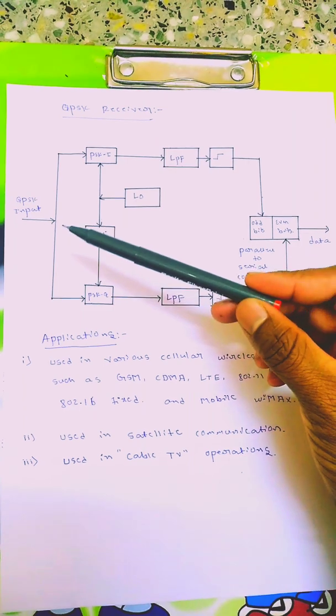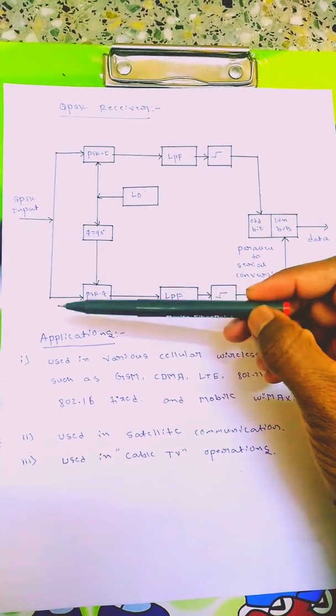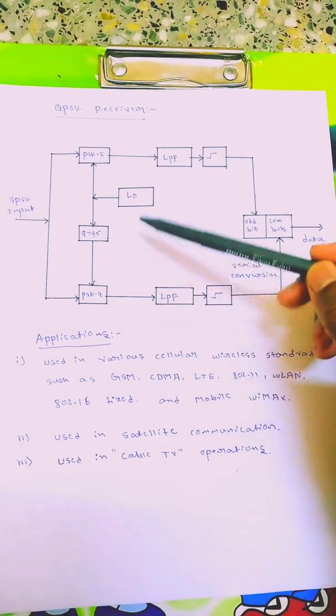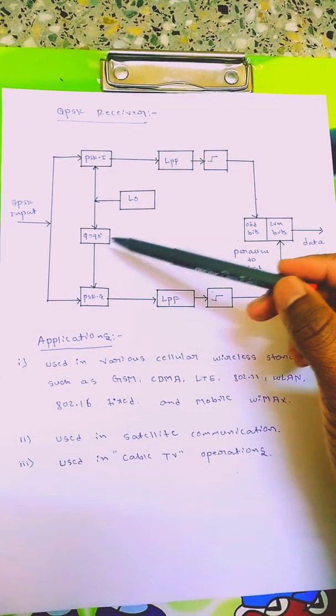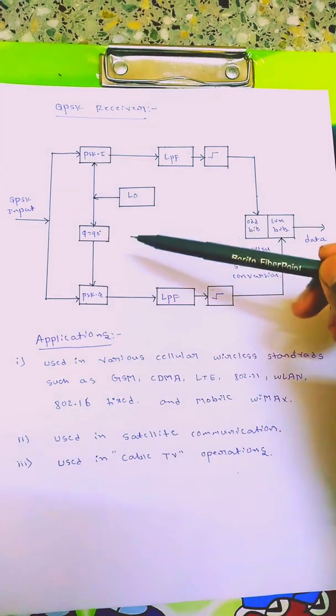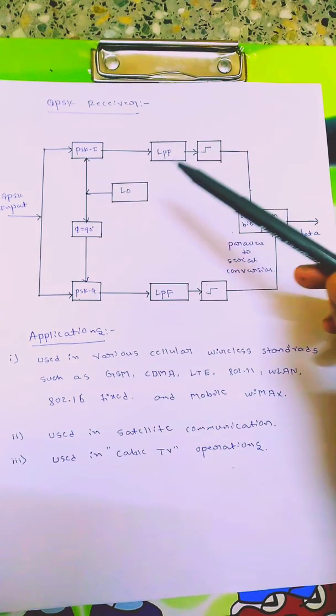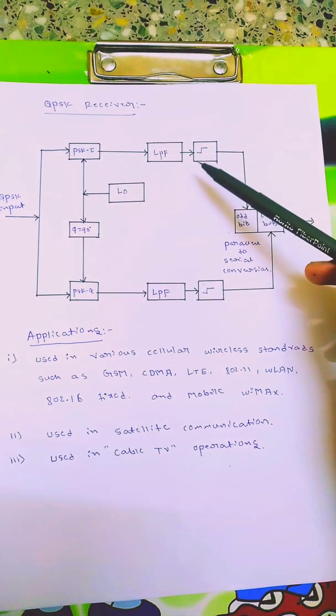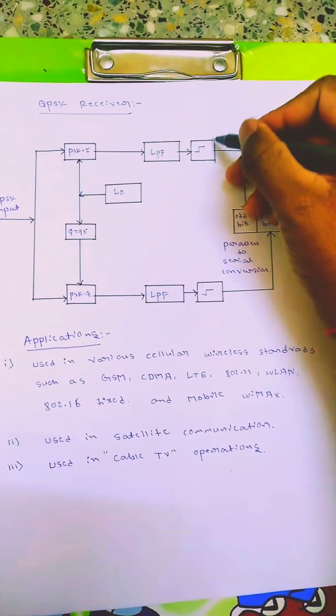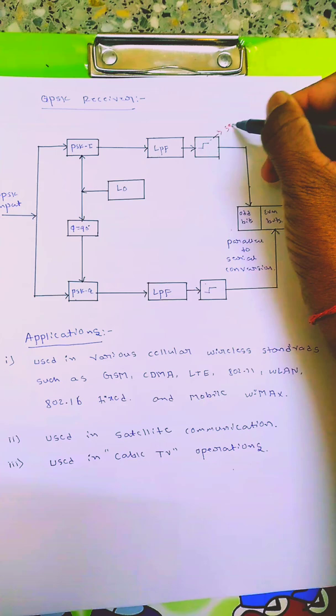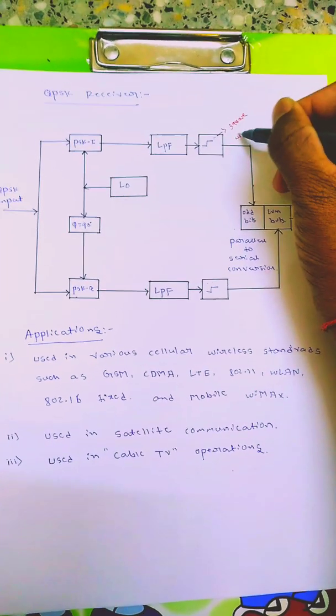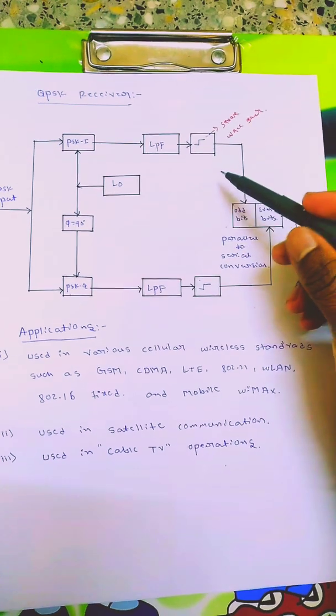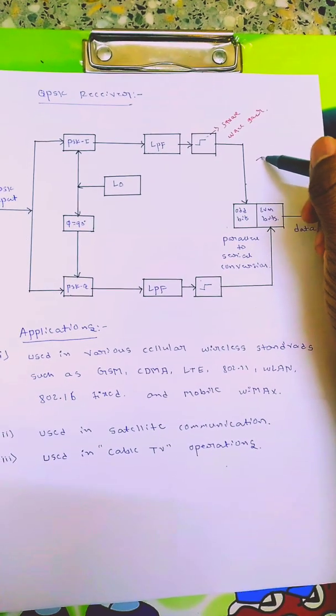QPSK receiver is similar. QPSK input is given here. Then PSK I channel and PSK Q channel are there. Local oscillator with 90 degree phase shift. This setup is basically the carrier setup. Then it's given to low pass filter, so the carrier is filtered here. Then it's given to square wave modulator or square wave generator.